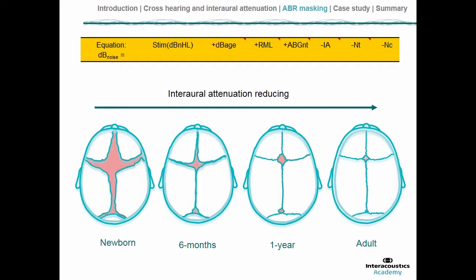I'm displaying the developmental trajectory on this slide. Moving from newborns to adulthood, the approximate fusion of the cranial plates shows that interaural attenuation gradually drops over time. It's thought to be around 20 dB higher in a newborn compared with an adult. So in the interaural attenuation value in the equation, that needs to be age-specific, and for a newborn we'd add on around 20 dB to the values described by Munro and Agnew.